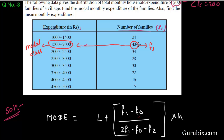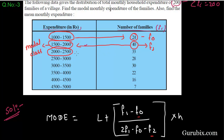Now we have to find F0. F0 is the frequency of the interval which comes before the modal class. We can see in this table that the interval 1000 to 1500 comes before the modal class, so 24 is F0. Now we have to find F2. F2 is the frequency of the interval which comes after the modal class interval. The 2000 to 2500 interval comes after the modal class and its corresponding frequency is 33. So F2 is 33.